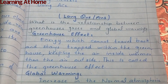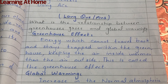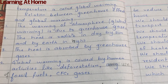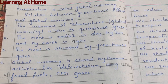Long question number one: what is the relationship between greenhouse gases and global warming? Greenhouse effect: energy which cannot travel back stays trapped within the greenhouse, keeping the air inside warmer than outside — this is called the greenhouse effect. Global warming is the increase in normal atmospheric temperature. The relation: warming of the atmosphere is due to greenhouse gases; heat is radiated by the sun during the day and by Earth at night, absorbed by greenhouse gases. Global warming is caused by human activities like deforestation, use of fossil fuels, and CFC gases — chlorofluorocarbons.